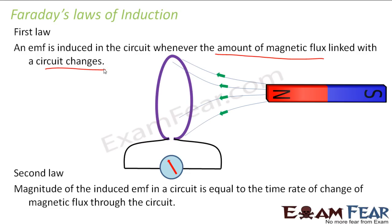He also told that the magnitude of the induced EMF is equal to the time rate of change of magnetic flux through the circuit. How did he know the magnitude? While performing the experiment, he tried moving the magnet faster and observed that when he moved it faster, the deflection was more. That means the faster you move the magnet, the faster is the change in magnetic flux, and as a result the more is the induced current and the more is the deflection in the galvanometer.